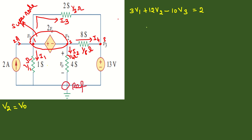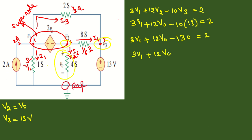We can rewrite this, and we know V2 and V0 are the same. V3 is nothing but the third node. We can substitute these: 3V1 plus 12V0 minus 10V3 equals 2. Since V3 equals 13V, we get 3V1 plus 12V0 minus 130 equals 2, so 3V1 plus 12V0 equals 132. This is our second equation.